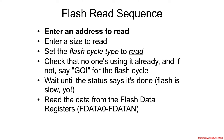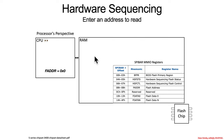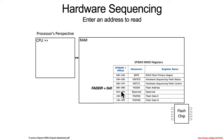All right, so let's put it all together in animation form. Enter an address to read. FADDER equals 0, so that would be written to the FADDER at offset 8.